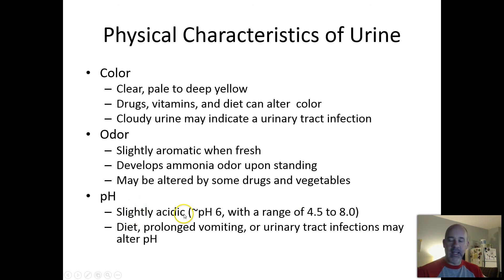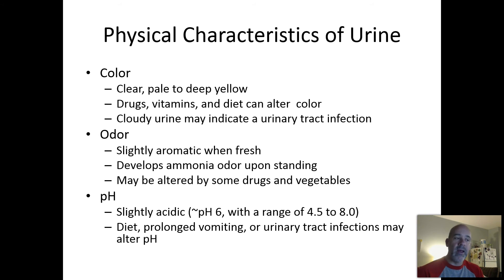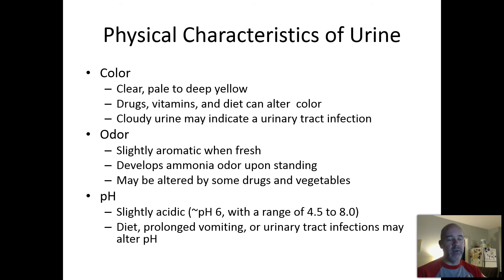In general, urine pH is slightly acidic, around pH 6. The normal range can be anywhere from 4.5 to 8. The slightly acidic pH is actually important for helping to control urinary tract infections — most microorganisms don't like the slightly acidic conditions of the urine. The urine stream also helps flush microorganisms out, so those acidic conditions help prevent UTIs from developing.